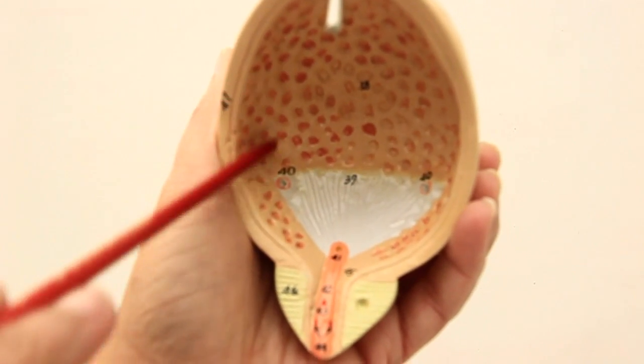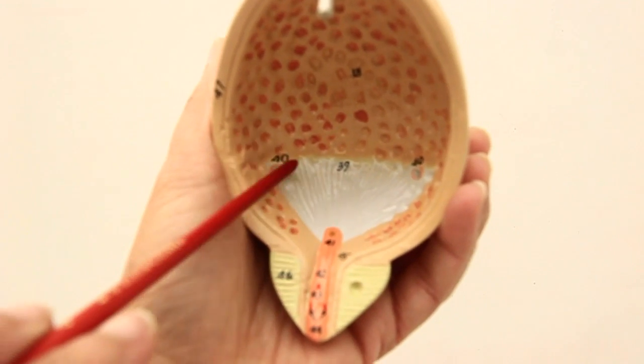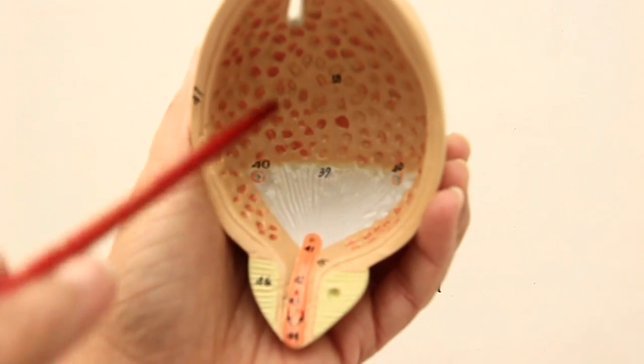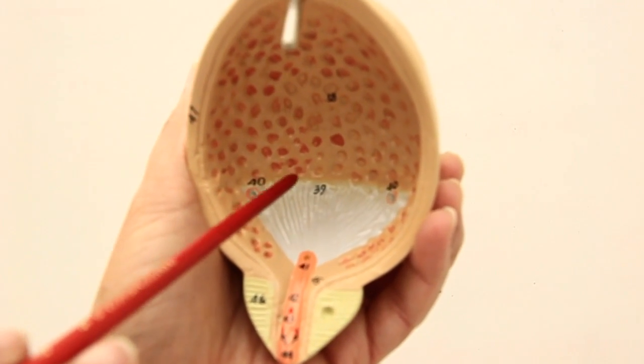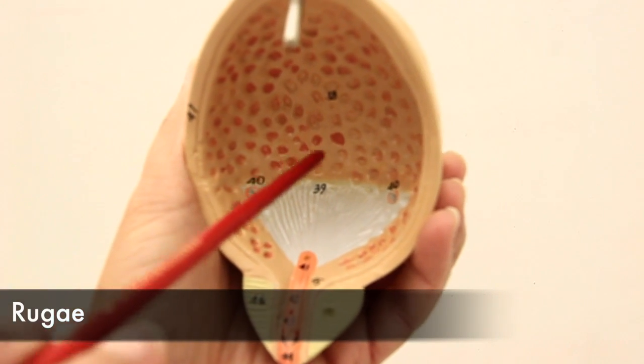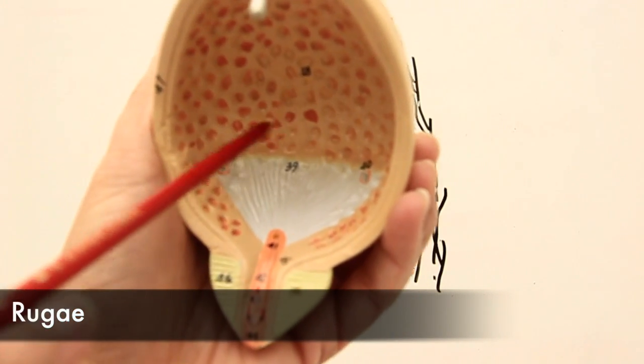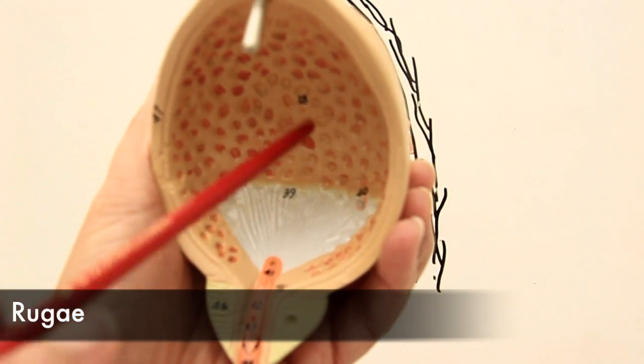You can see here the mucosa, the inner lining of the bladder, has been thrown into multiple folds. These are known as rugae, just like the folds of the stomach are also known as rugae.